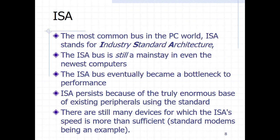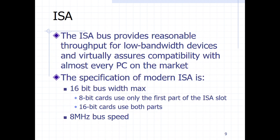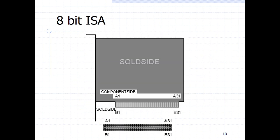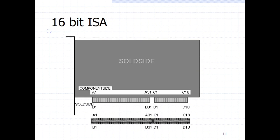Let's look at the most outdated — the ISA bus, known as the Industry Standard Architecture. It had key performance issues because of its speed; it couldn't support the newer devices. It had a transfer rate of 8 MHz and could only support a 16-bit bus width — we also had the 8-bit bus width. So it couldn't support the many devices being used nowadays and had to be phased out.